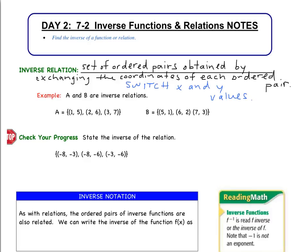For the Check Your Progress, state the inverse of the given relation — all we're doing is switching the x and y values. Instead of (-8, -3) we have (-3, -8). Instead of (-8, -6) we have (-6, -8). And instead of (-3, -6) we have (-6, -3). And there is our inverse relation.